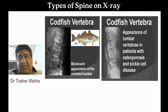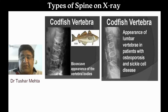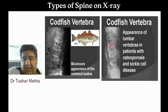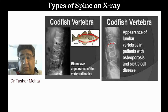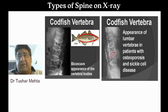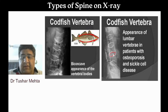Now, why is bi-concave vertebra called fish mouth spine? If you see the shape of a fish, the bi-concave vertebral shape is almost like that — it resembles the mouth of a fish. So fish mouth, or mouth of a fish, equals bi-concave vertebra.